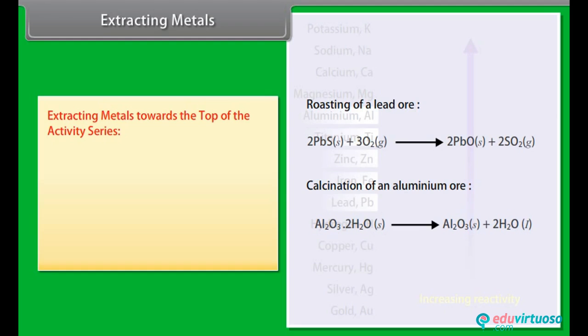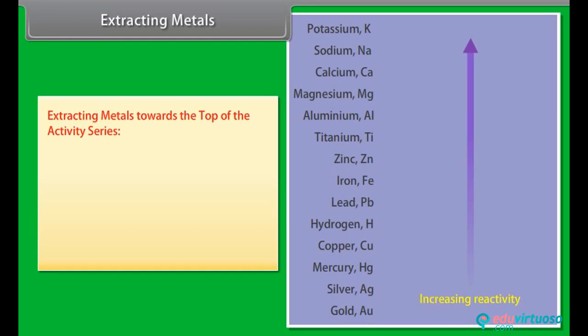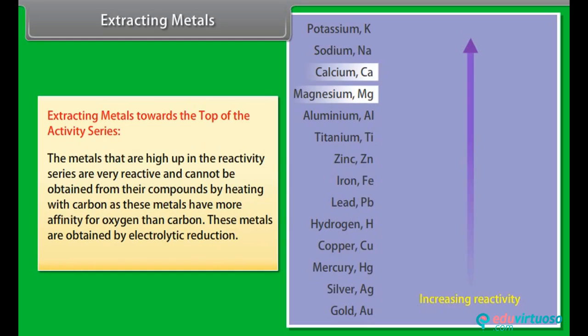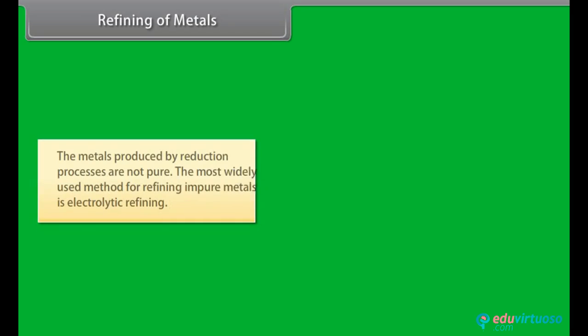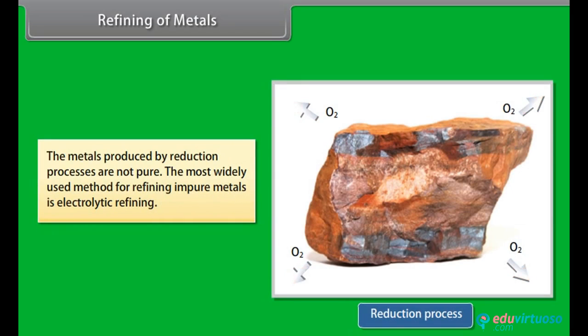Extracting Metals towards the top of the activity series: The metals that are high up in the reactivity series are very reactive and cannot be obtained from their compounds by heating with carbon as these metals have more affinity for oxygen than carbon. These metals are obtained by electrolytic reduction.